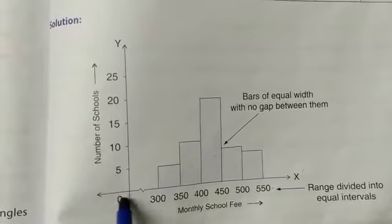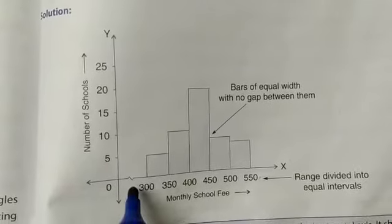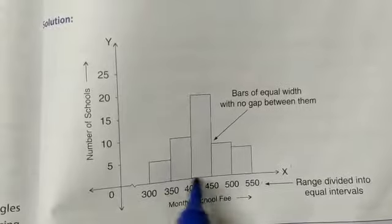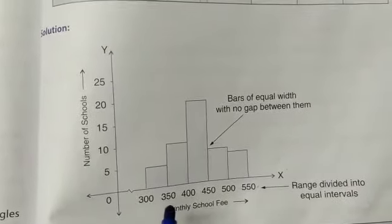You can see the kink sign, because the value is starting directly from 300, that's why the kink sign is here. There is continuity, no gap between the boxes. So, on the basis of this, let's start your worksheet one.